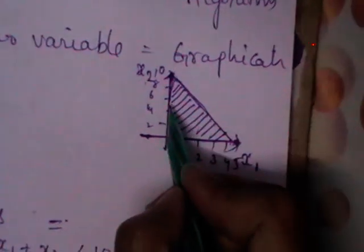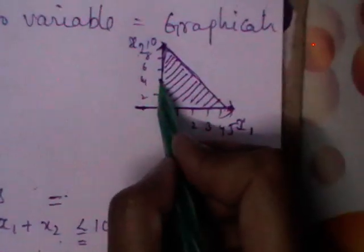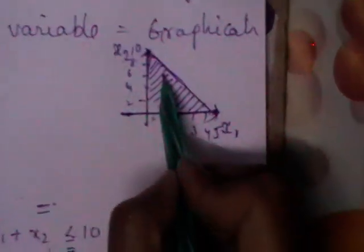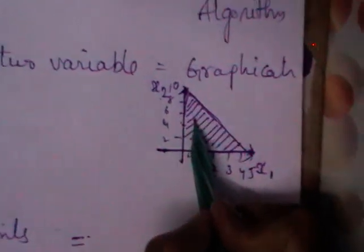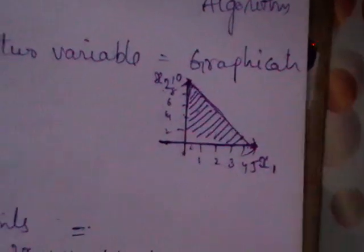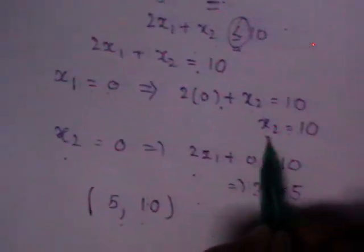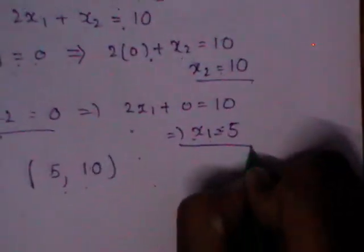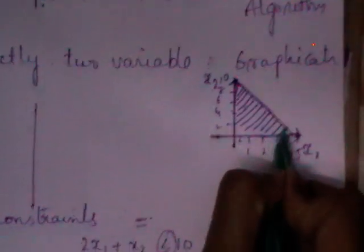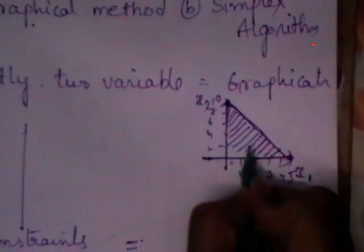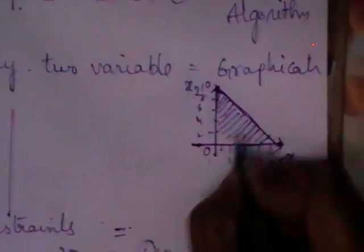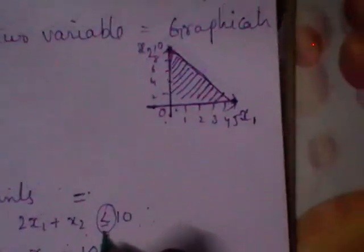If the original constraint is of less than or equal to type, shade the region towards the origin. Plot each constraint by converting it to an equation, find the ordered pairs by setting each variable to zero in turn, represent the result as a line, and shade the area towards the origin for less than or equal to type constraints.